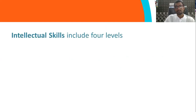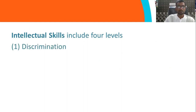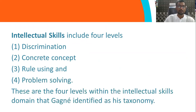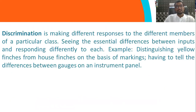Next, intellectual skills. Intellectual skills can be classified with the support of four levels. The four levels are: discrimination, concrete concept, rule using, and problem solving — the final four levels within the intellectual skills domain, which Gagne identifies in his taxonomy. Discrimination is the first element: making different responses to different members of a particular class.